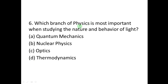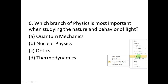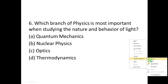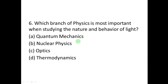Question number six: Which one of the following branches of physics is most important when studying the nature and behavior of light? A: Quantum mechanics, B: Nuclear physics, C: Optics, D: Thermodynamics. The answer is C — optics, which is related to the behavior and nature of light.